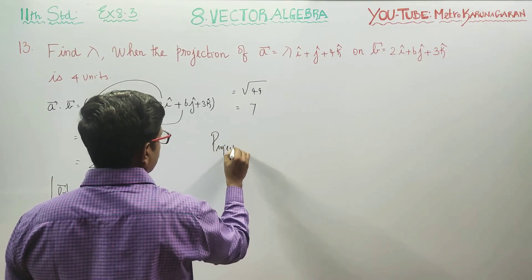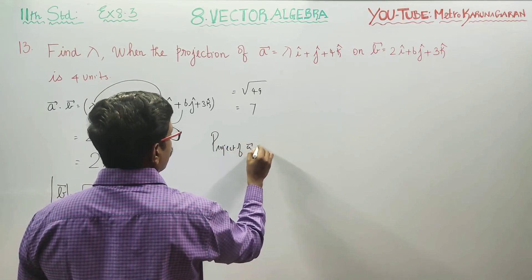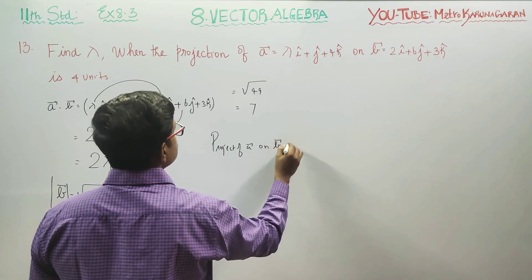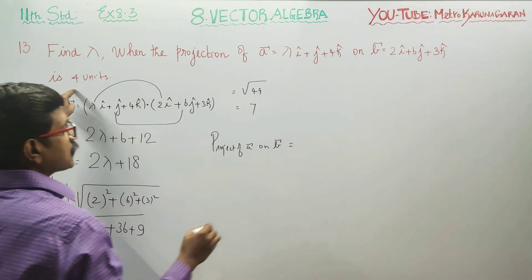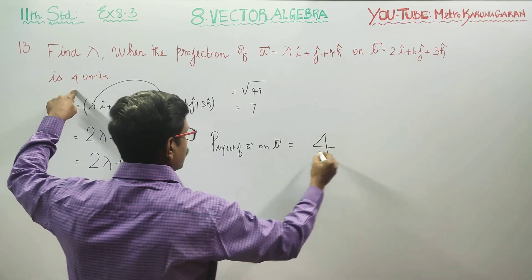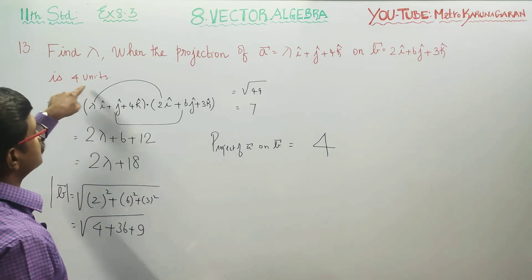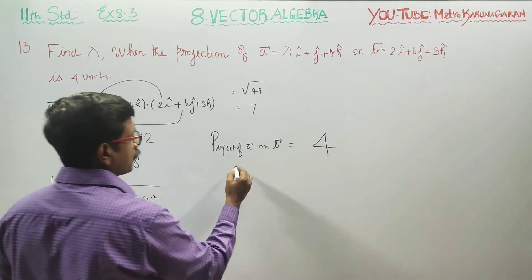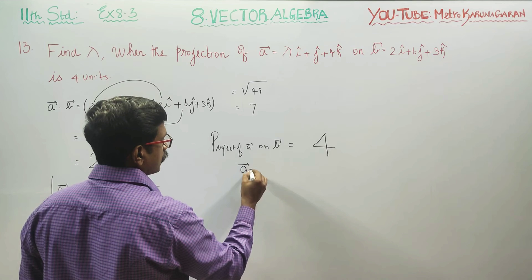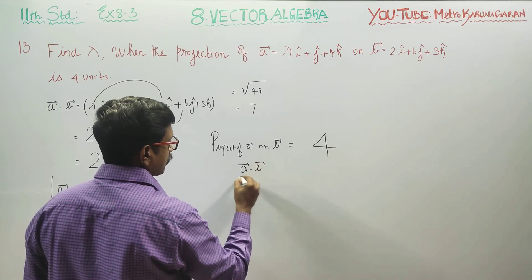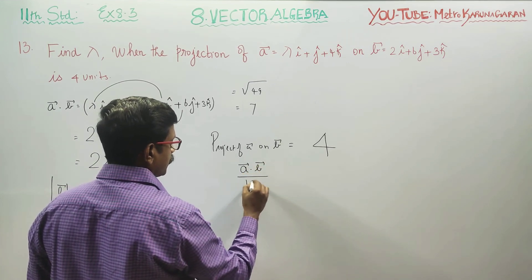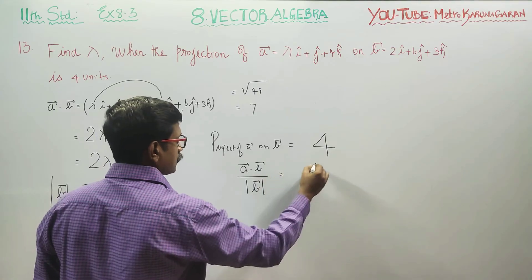Projection of A vector on B vector equals 4 units. Projection is A dot B divided by magnitude of B vector equals 4.